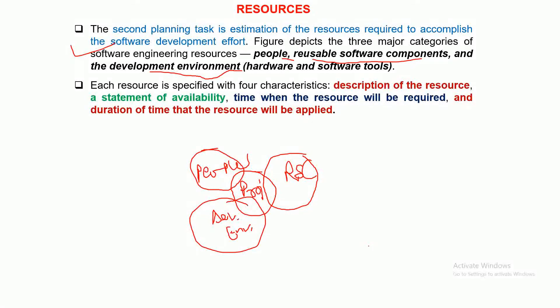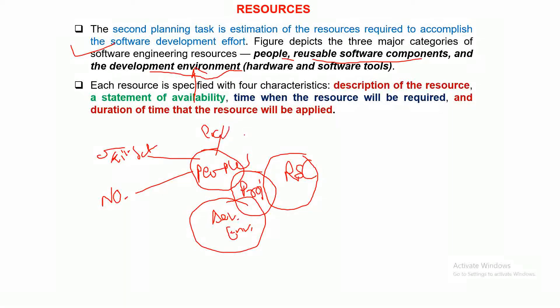Let us discuss the people resource. You need to clearly plan that for the software you are developing, you need to identify the skill set of the people required to accomplish that particular development activity. You need to identify the team size — the number of people required to accomplish the task and prepare quality software in a timely fashion. You also need to identify the location of the people.